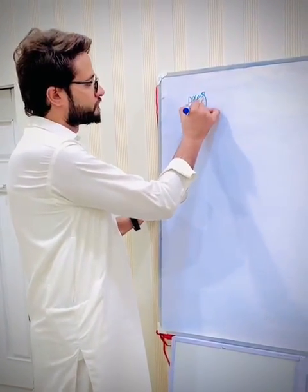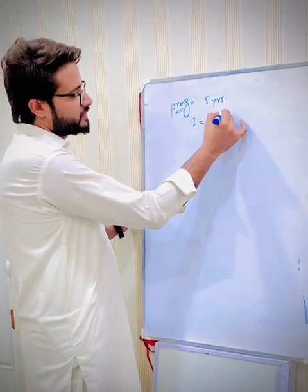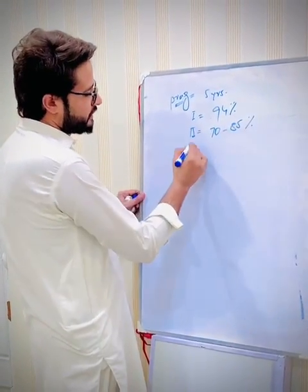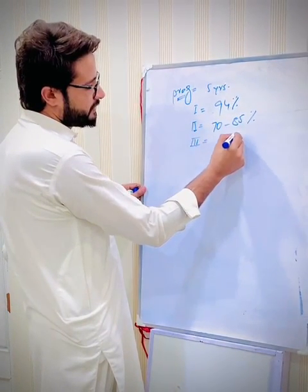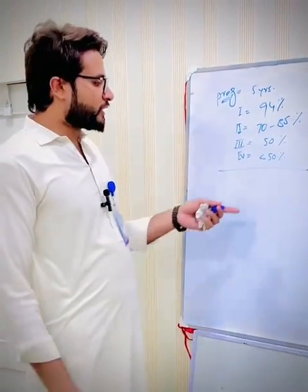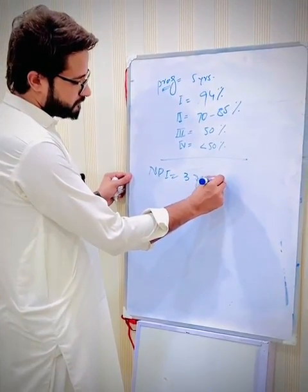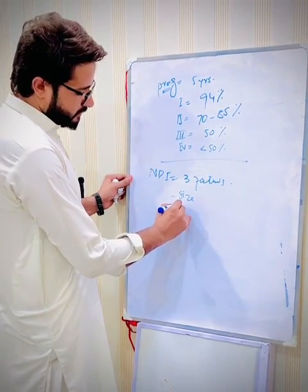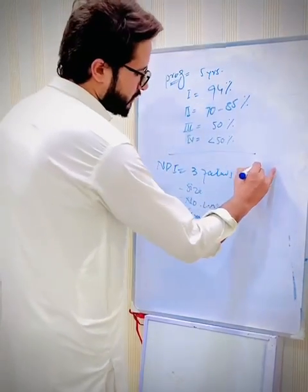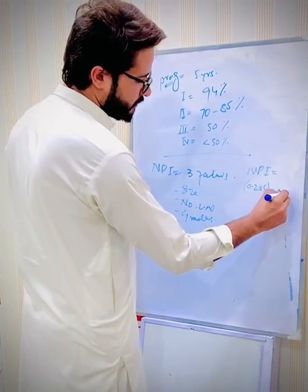Now coming towards prognosis, meaning five-year survival rate. If the disease is in stage one, survival rate for five years is 94%. Stage two survival rate is 70 to 85%. Stage three survival rate is 50%. Stage four survival rate will be less than 50%. There is also the Nottingham Prognostic Index (NPI), which calculates three factors: size, node involvement, and grade of the disease. The formula is NPI equals 0.2 multiplied by S plus nodes plus grade.